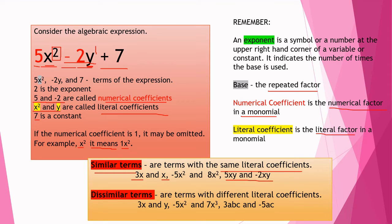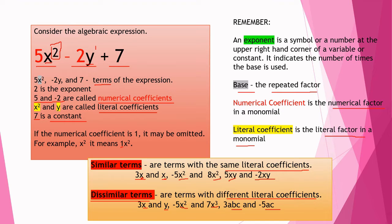On the other hand, terms with different literal coefficients are called dissimilar terms. For example, 3x and y have different literal coefficients. Negative 5x² and 7x³ have the same variable but different exponents. And 3abc and −5ac have different literal coefficients. We cannot combine terms that are dissimilar.